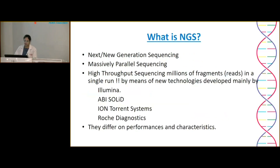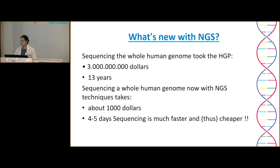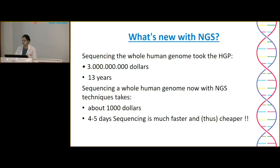Coming to NGS, also called massively parallel screening. There are different platforms, with Illumina and Ion Torrent being most commonly used, differing in performance and characteristics. The Human Genome Project took $3 billion and 13 years. If NGS had been available then, it would have taken only $1,000 and four to five days — illustrating how massively parallel sequencing really is.